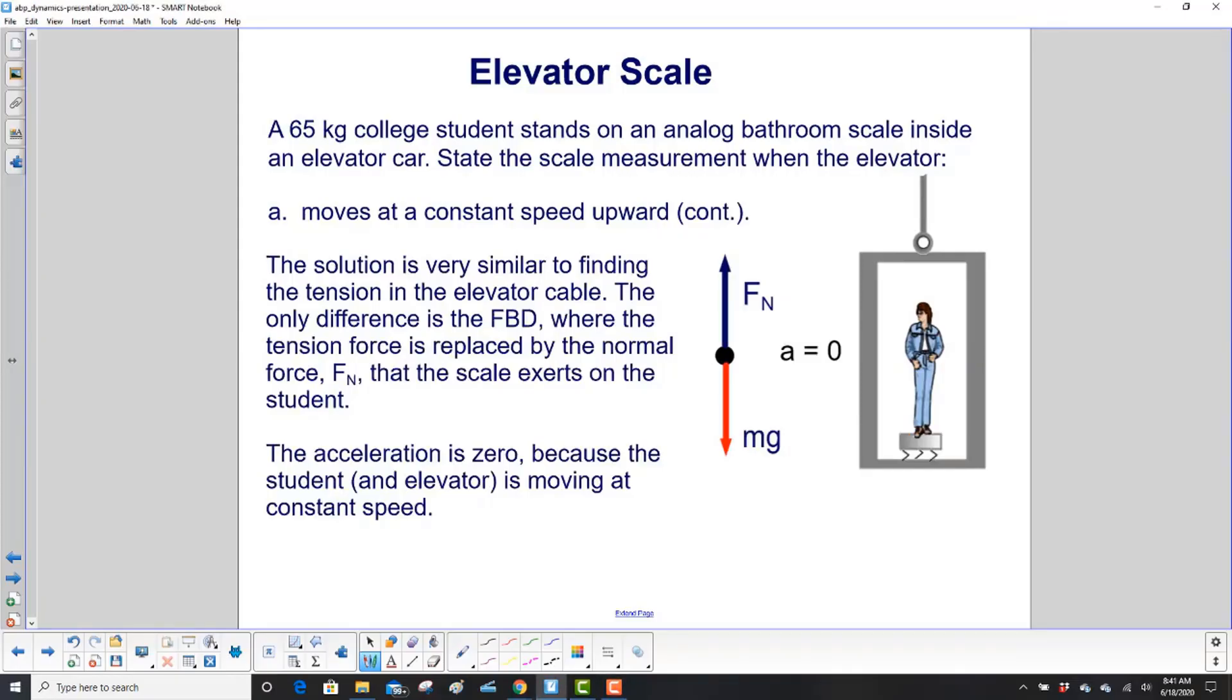As the problem is very similar, the math is very similar. The only difference in our free body diagram will be, instead of tension force, which is up here, we're worried or concerned about the normal force that the scale exerts on our object of interest, which is the student. The acceleration is zero because the student and the elevator are moving at constant speeds. And that's where we get a is equal to zero.